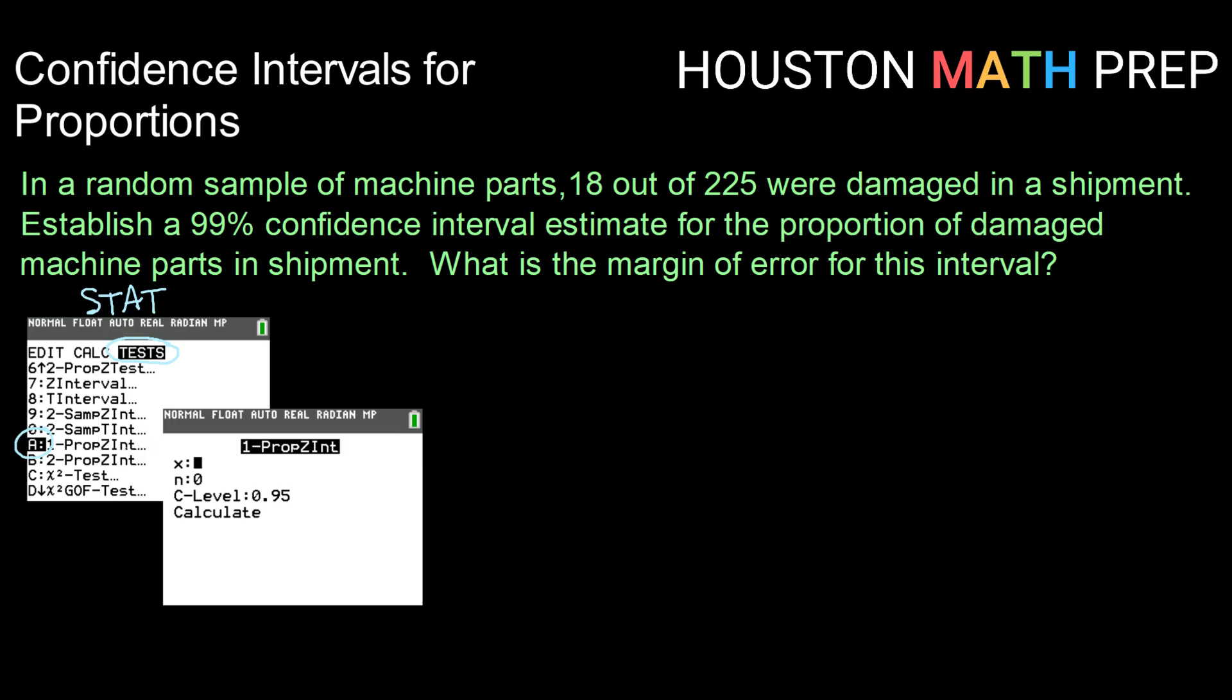Since we are working with proportions, a single proportion here and a Z interval, that's what we're going to want. When you bring that up, it's going to ask you for three items. It's going to ask you for X, or the number of successes. It's going to ask you for N, or the number in your sample. And then it's going to ask you for your confidence level.